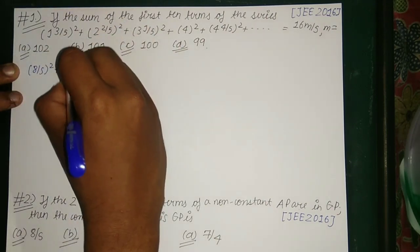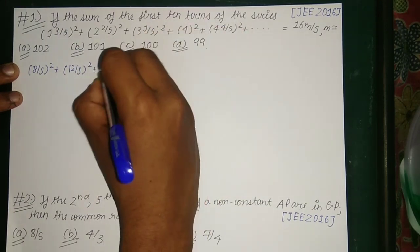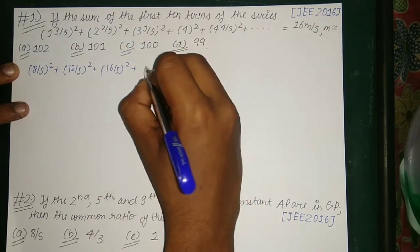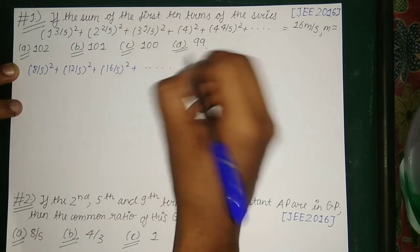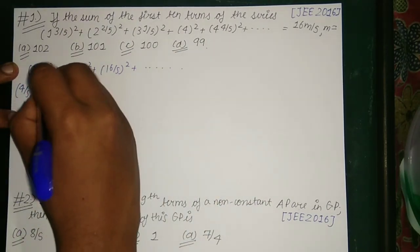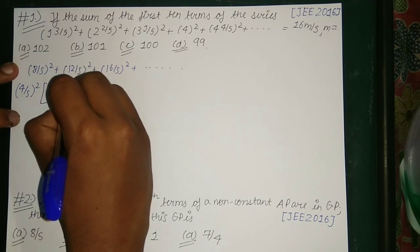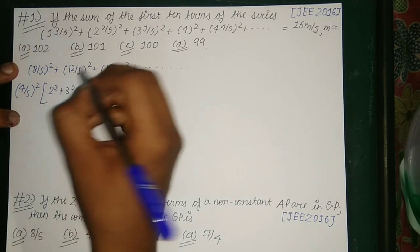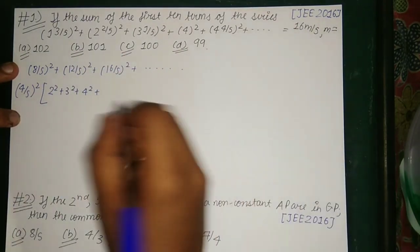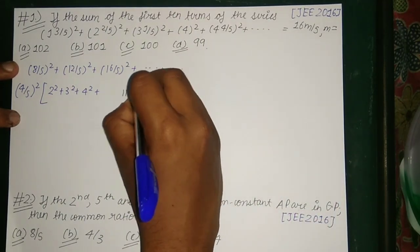So 1 3/5 can be written as 8/5, and 2 2/5 can be written as 12/5. Similarly, 3 1/5 can be written as 16/5. So from this we get a series, and taking out (4/5)² as common from all these terms, we get 2² + 3² + 4²... So we have 10 terms in this, and the 10th term can be given by 11².